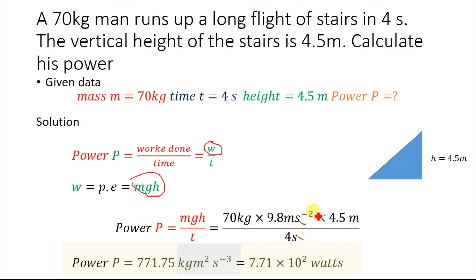And this m squared came from when we multiply this m with this m. So finally we will have 7.71 multiplied by 10 to the power 2 watts. This unit is equal to watts.